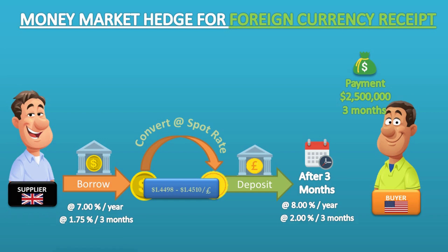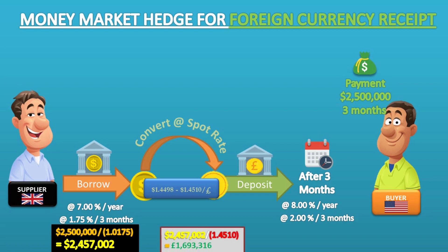The interest rates for three months are 2.00% to deposit in pounds and 1.75% to borrow in dollars. The seller should borrow $2,457,002 today and deposit the dollar amount for three months, which will grow to $2,500,000 after three months. This amount will be repayable to the dollar bank including interest after three months. The $2,457,002 is converted to pounds at the spot rate of 1.4510, making £1,693,316 today. The supplier must deposit this amount for three months, where it increases at 2% interest.